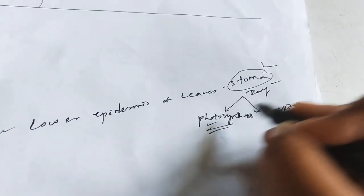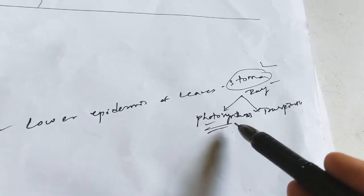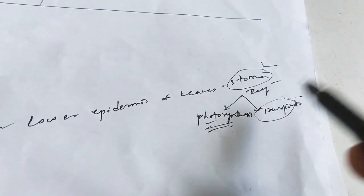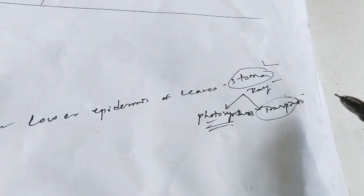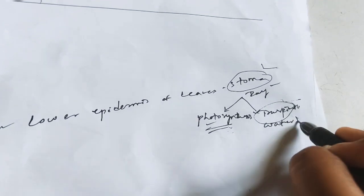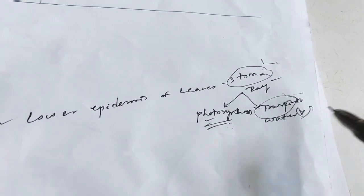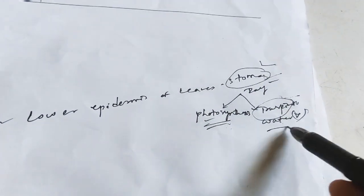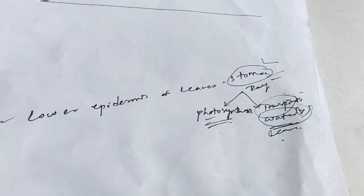The two functions are photosynthesis and transpiration. Photosynthesis is the process of food synthesis. In case of transpiration, the release of excess amount of water in the form of water vapor occurs. This water vapor is released out through the stoma, from the leaves and aerial parts of the plants.